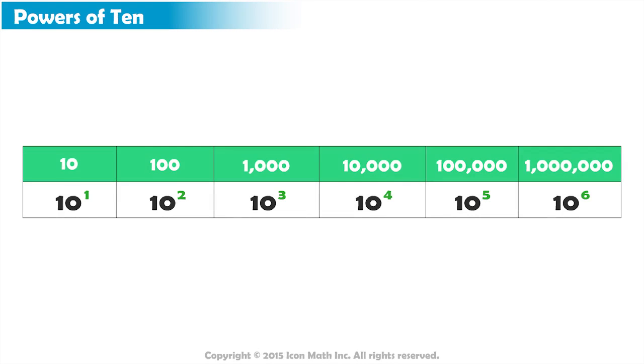The following table shows the powers of 10 up to a value of 1 million. The second row shows the values written as an exponent of 10. As you can see, the number in the exponent is equal to the number of zeros on the right of 1.